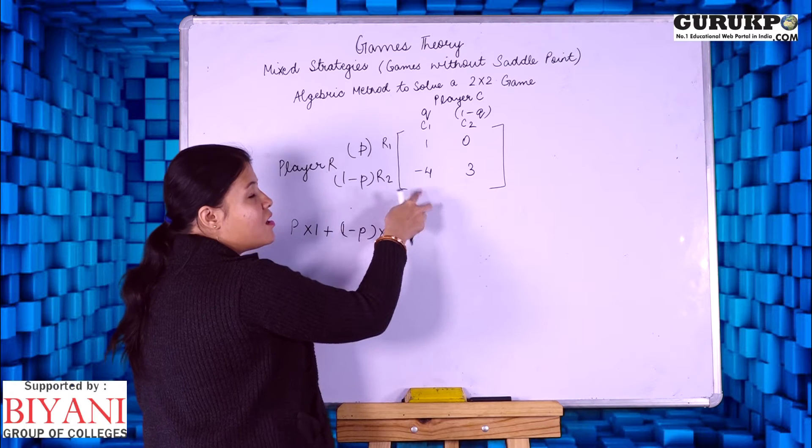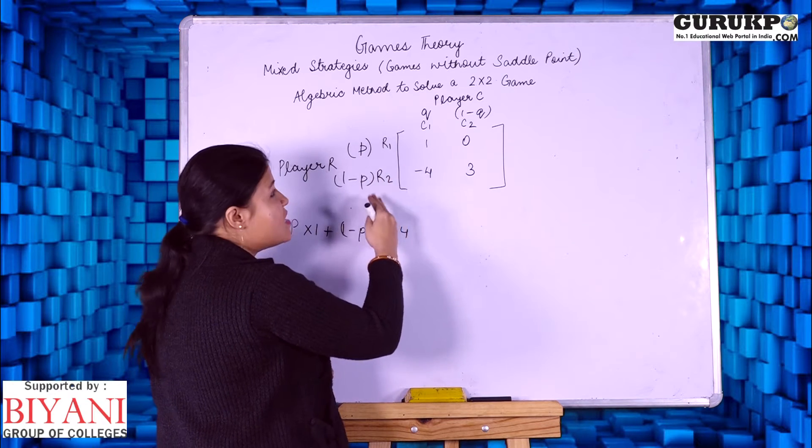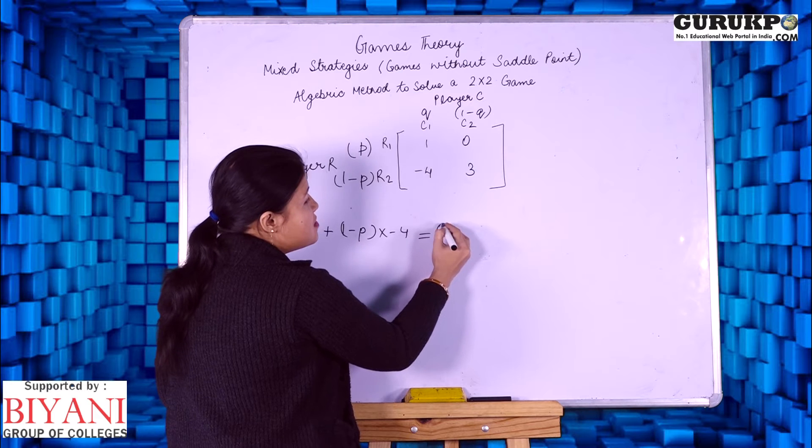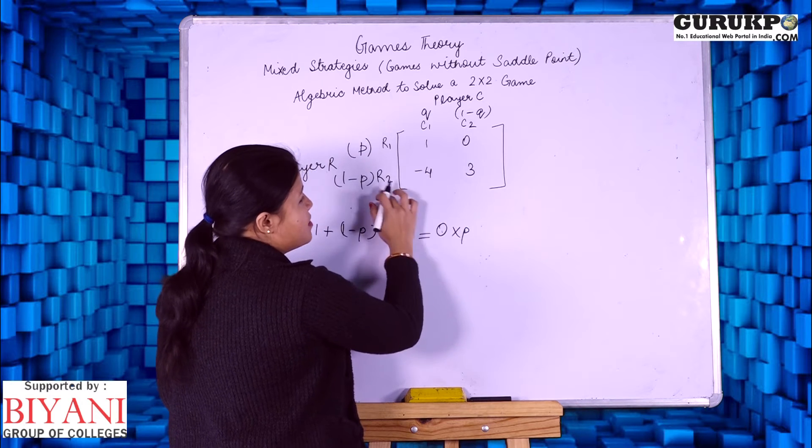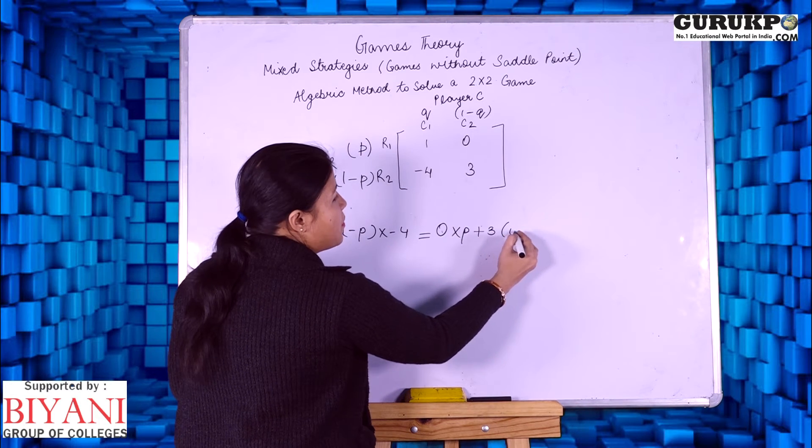We are going to repeat the same step with the next strategy. That is equals 0 into P plus 3 into 1 minus P.